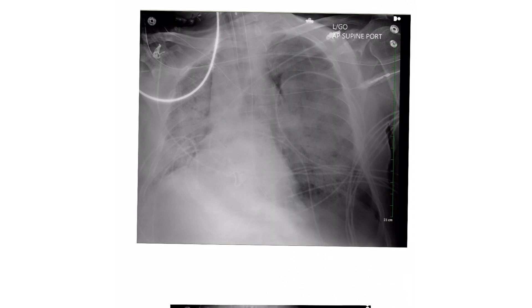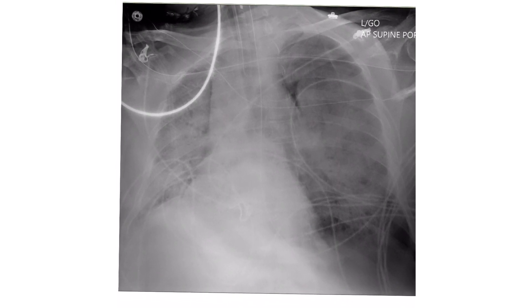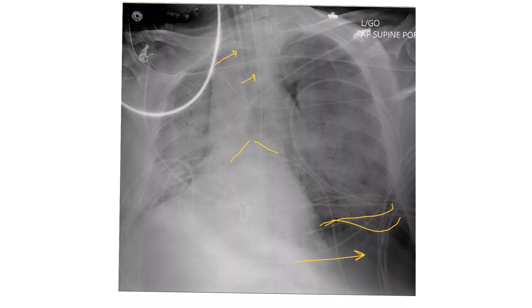This is a chest x-ray for a patient we had. I want to show you — there is a large pneumothorax in this area with lung compression. This is the ET tube, this is the tip, and the carina is right here — good position. This is the NG tube going all the way down, also in good position.